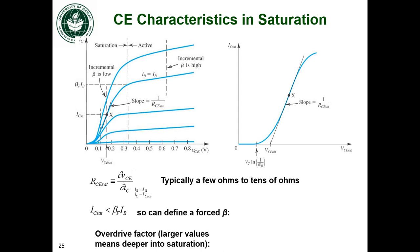This collector current is going to be less than the value of beta times the base current. Because it's less than that, we're going to define a different beta. This is the forced beta, beta sub force, and that's going to be the collector current in saturation divided by the base current. This value of beta is always going to be less than the value of beta in forward active mode.